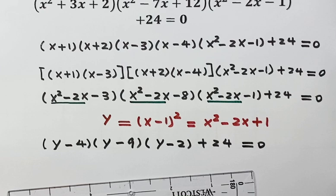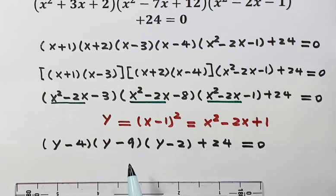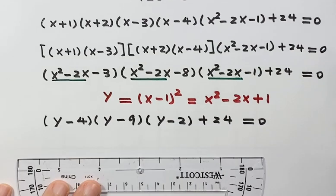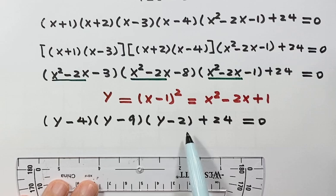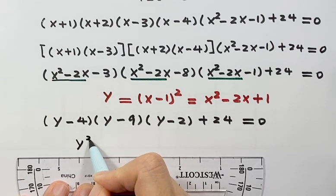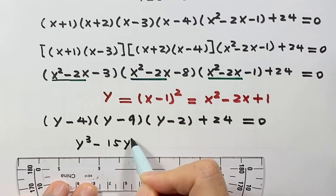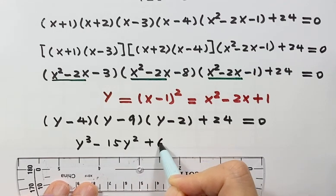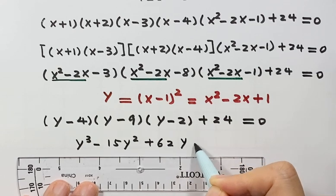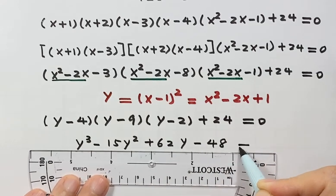So x squared minus 4 equals 0. We have already changed the original 6-degree equation — now we have a cubic equation. Let's expand the factors and simplify. We get y cubed minus 15y squared plus 62y minus 48 equals 0.